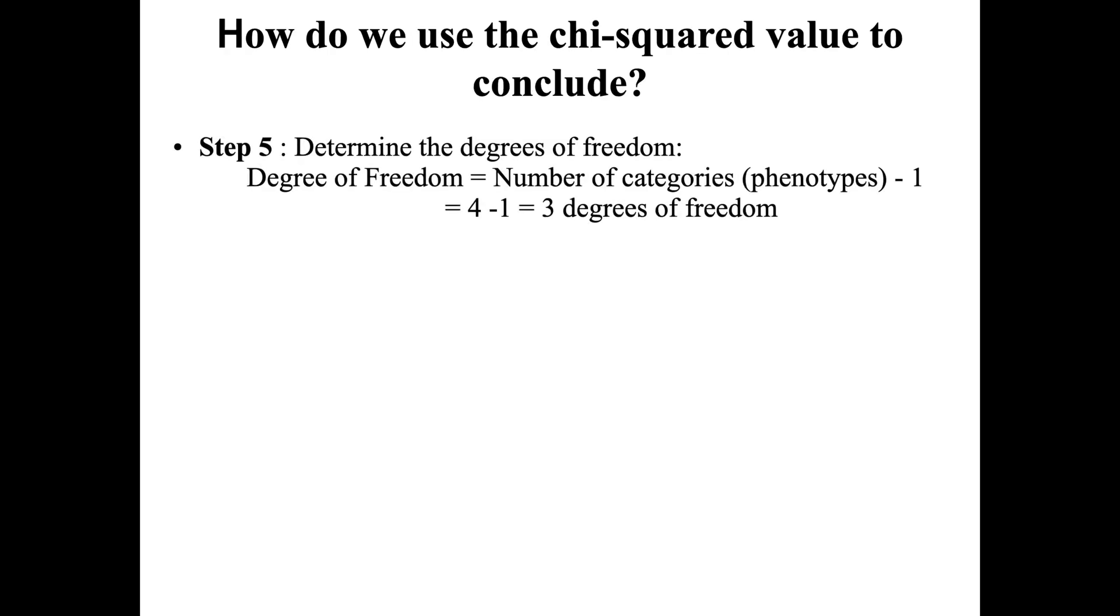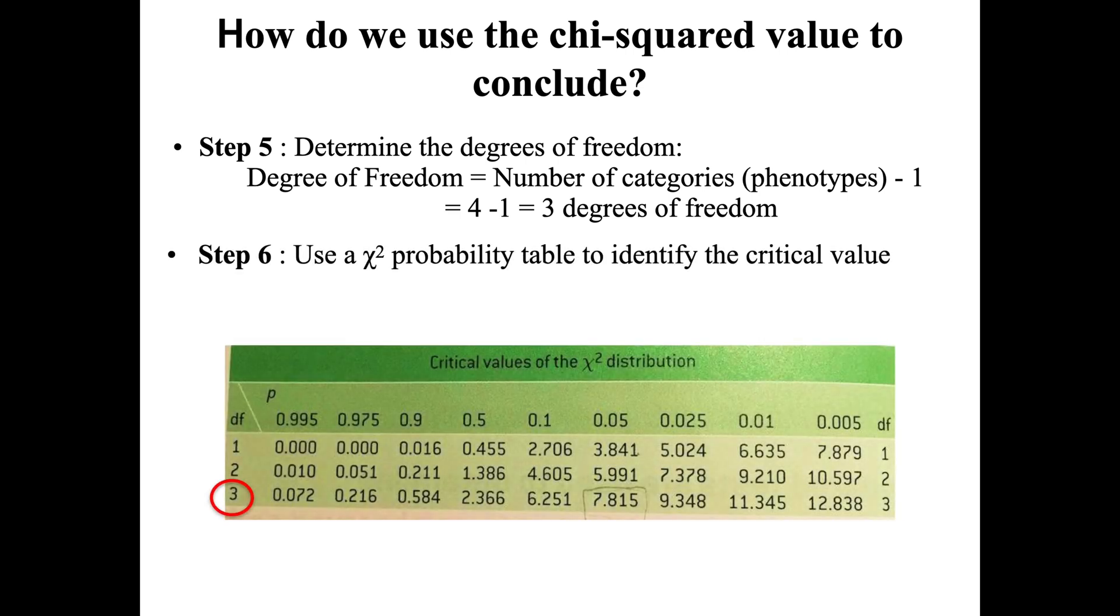Now our degrees of freedom—again we had four categories, that's three degrees of freedom. And if we take a look at our table of values, that gives us 7.815 as a critical value of chi-squared.